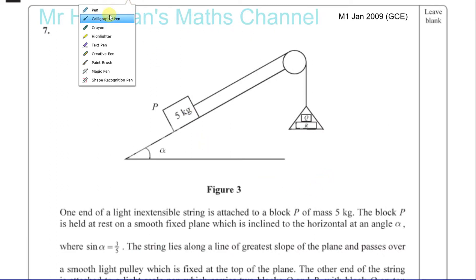Here we have one end of a light, inextensible string attached to a block P of mass 5 kg. The block P is held at rest on a smooth, fixed plane, so there's no friction involved here.